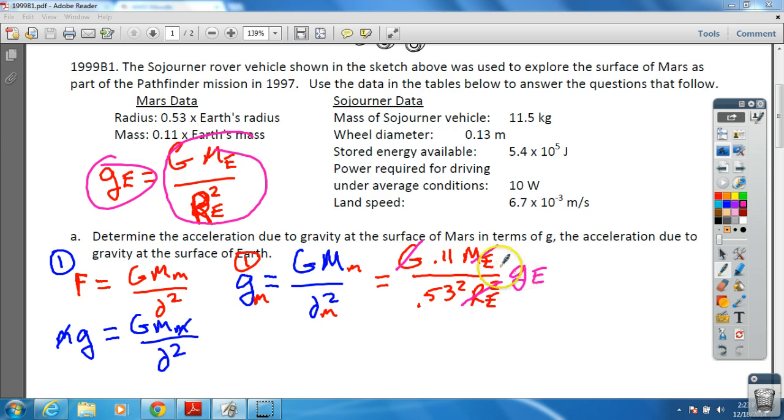So now instead of having GME and RE squared, we have gE. So now let's go ahead and rearrange this. Gravity on Mars is equal to 0.11 over 0.53 squared times gravity on Earth. And if you want to, you can reduce that down and make it 0.39 times the gravity of the Earth. And so that's our final equation.